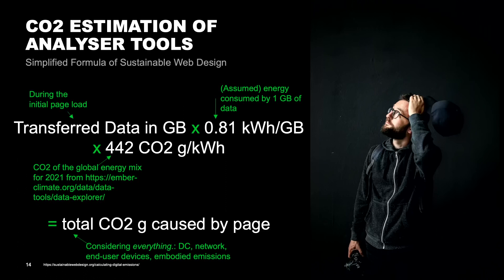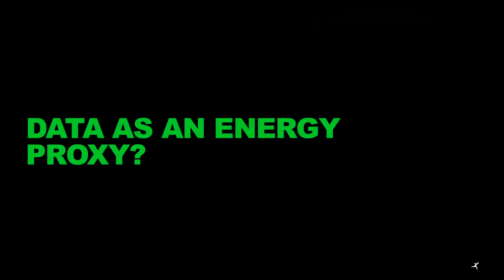And then what the formula doesn't include — but is actually the case for most of these website calculator tools — is that this is the transferred data for the initial page load. And I'm going to go into a bit more detail, because these two points — the initial page load and this value of 0.81 — are the curious values. So, data is an energy proxy.